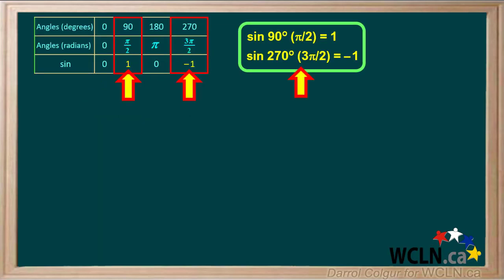This table tells us that the sine of 90 degrees or pi over two radians is equal to one, and the sine of 270 degrees or three pi over two radians is equal to negative one. Knowing these can be handy when determining restrictions for some trigonometric expressions.